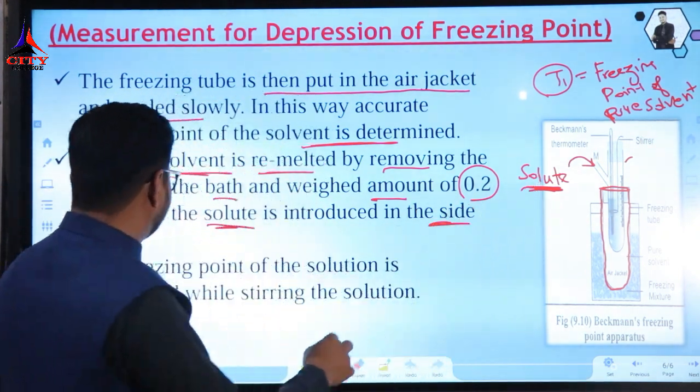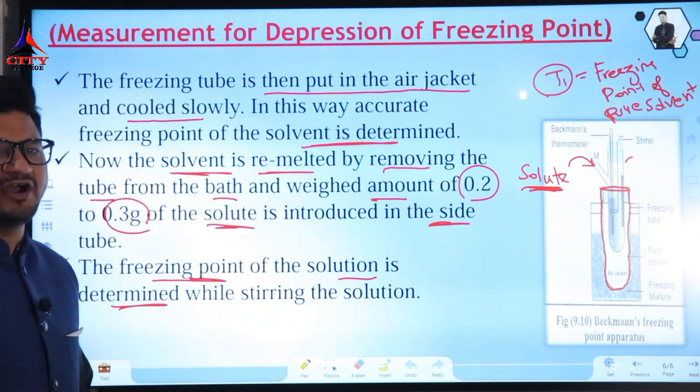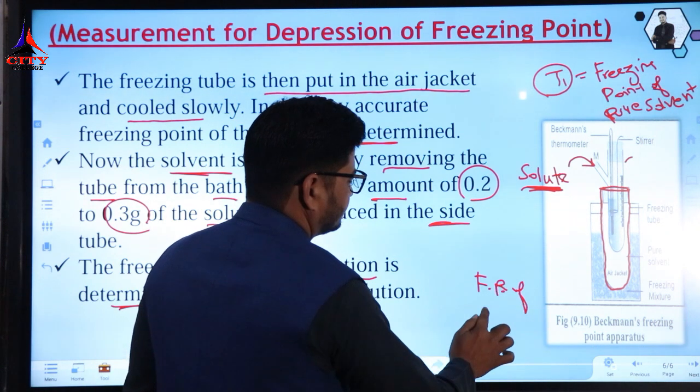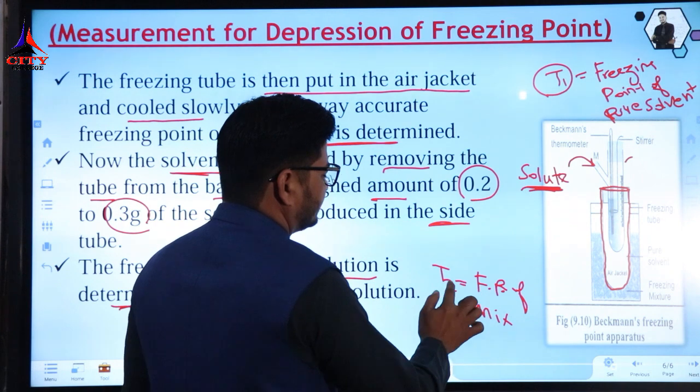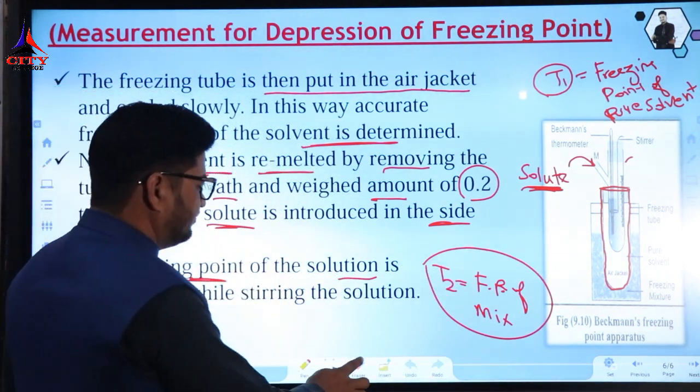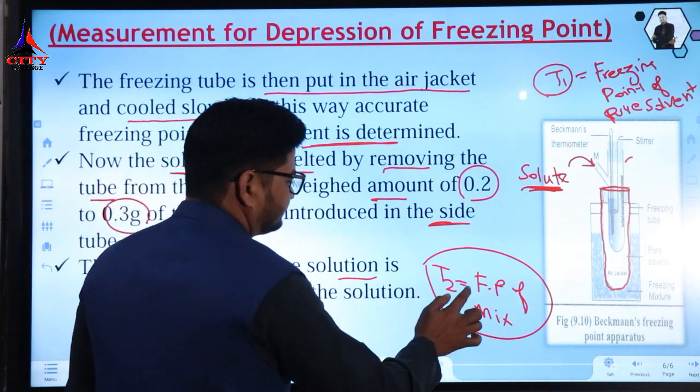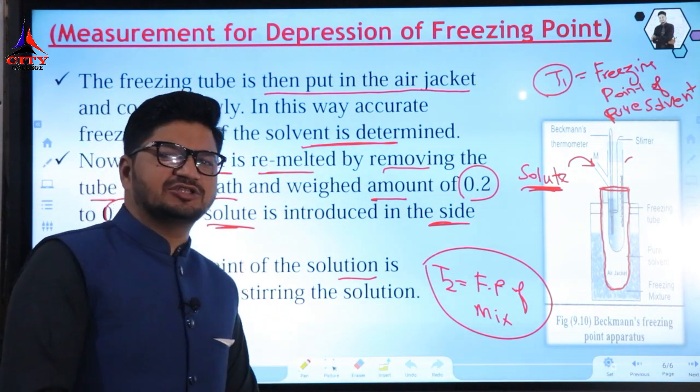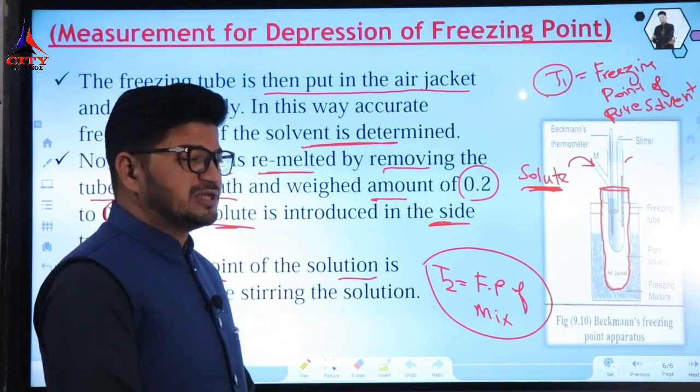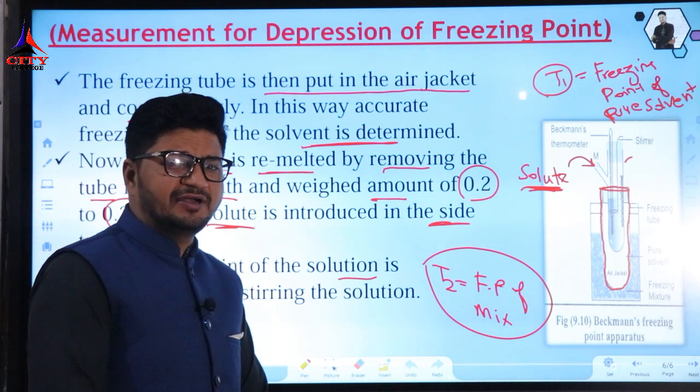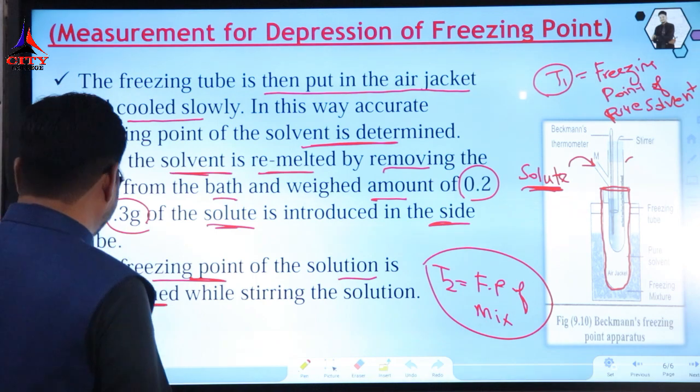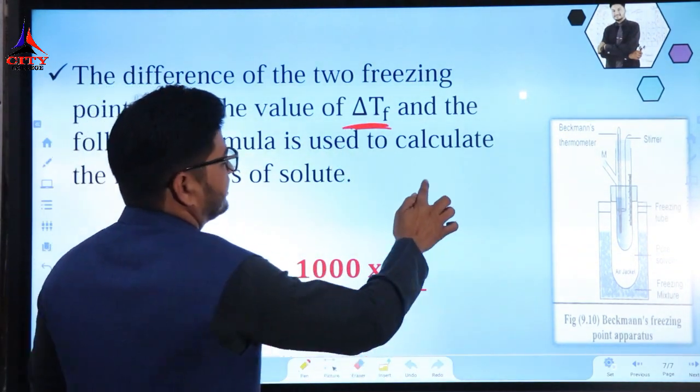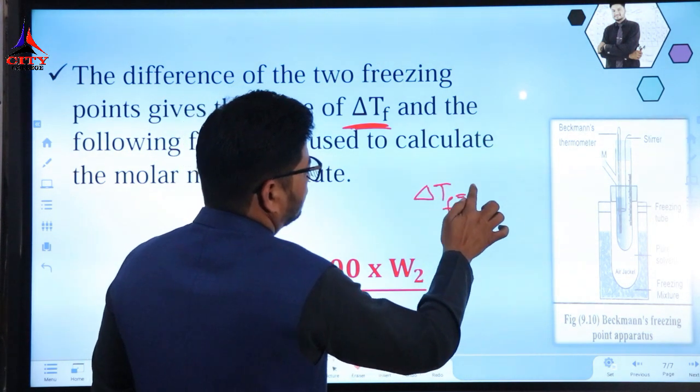A weighed amount of 0.2 or 0.3 grams of solute is introduced from the side arm, and the freezing point of the solution is determined. This is the freezing point of the mixture, T2. We have two values: the pure solvent freezing point and the mixture freezing point after putting the solute. The freezing point has been decreased. This can be easily measured using T1 and T2 to determine ΔTf. The change in freezing point is equal to T2 minus T1.